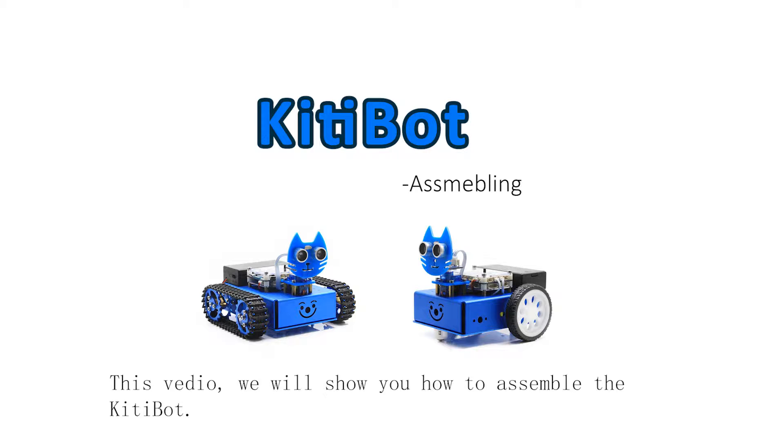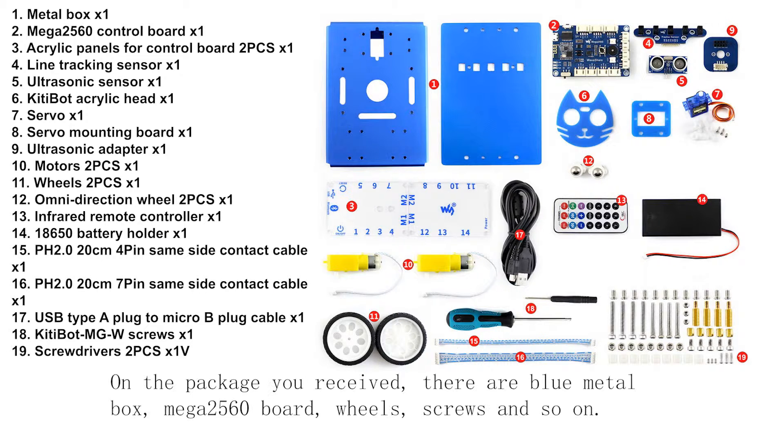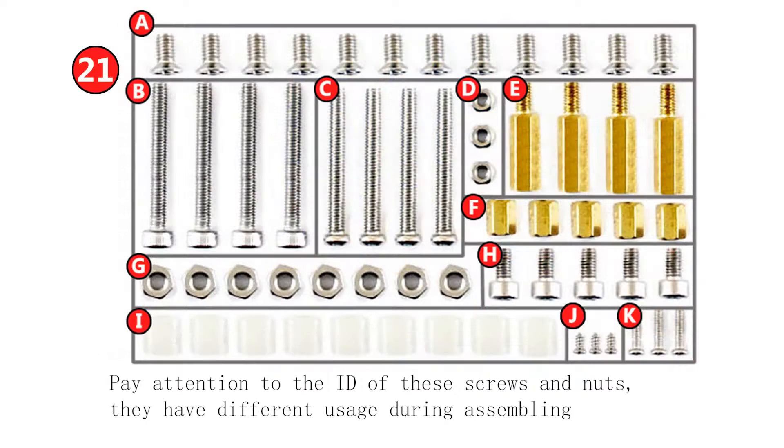Here we will show you how to assemble the KitiBot wheeled version. In the kit, there are blue metal box, control board, wheels, screws package and so on.